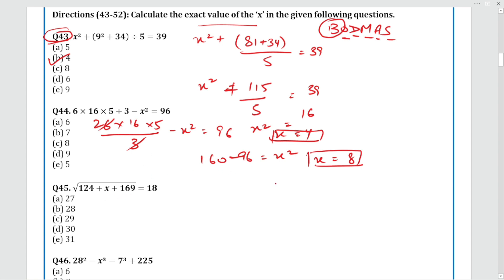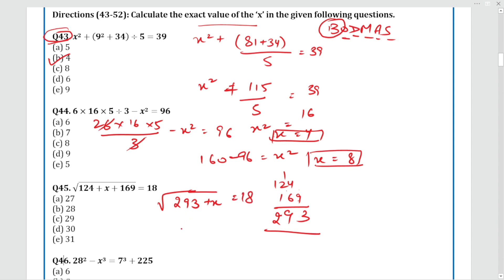Next question: involves 124 and 169. Adding 9 and 4 gives 13; and 293 plus X equals 18 (under root). So √(293 + X) = 18, meaning 293 + X = 324, thus X = 31. The answer is Option C.